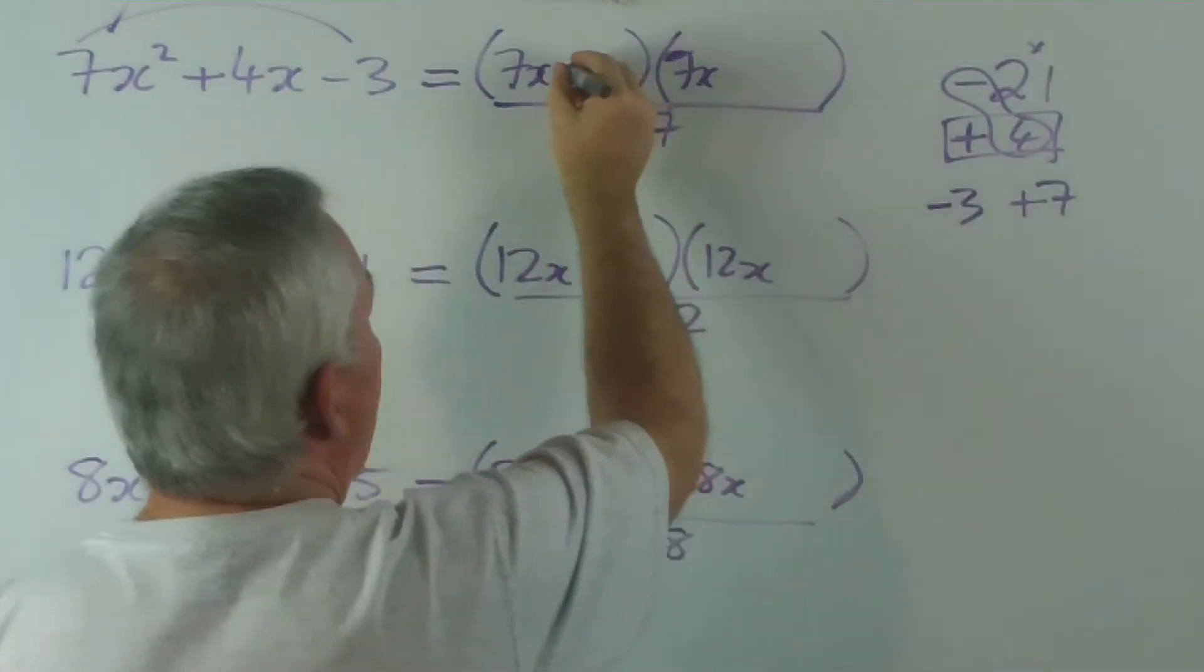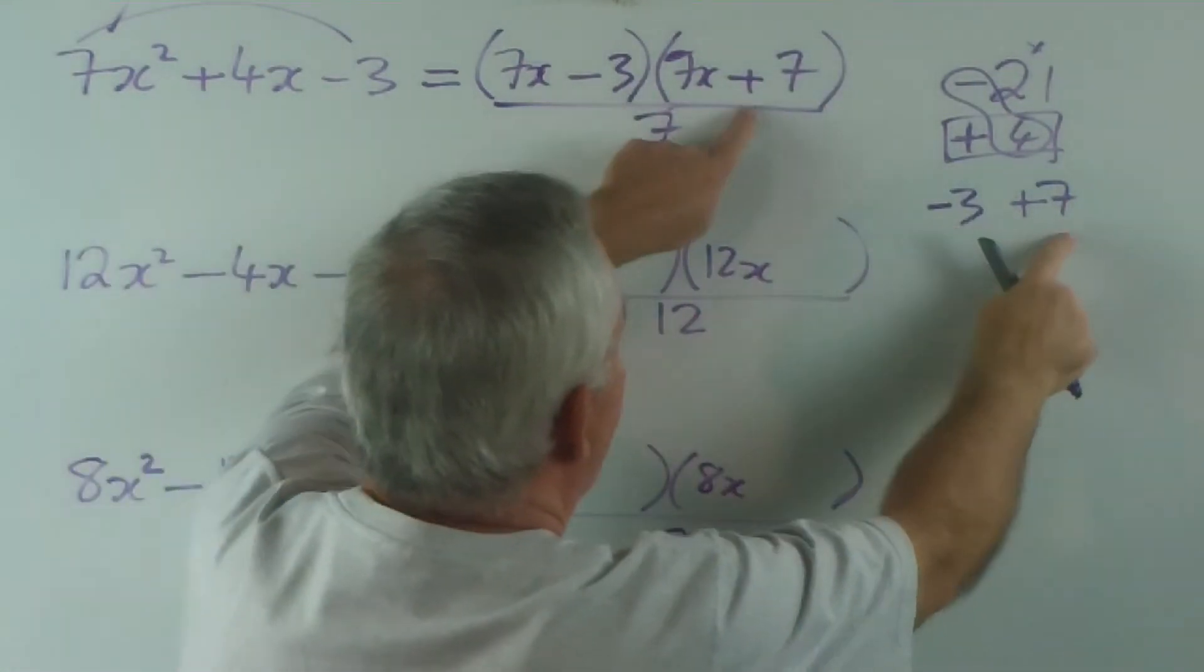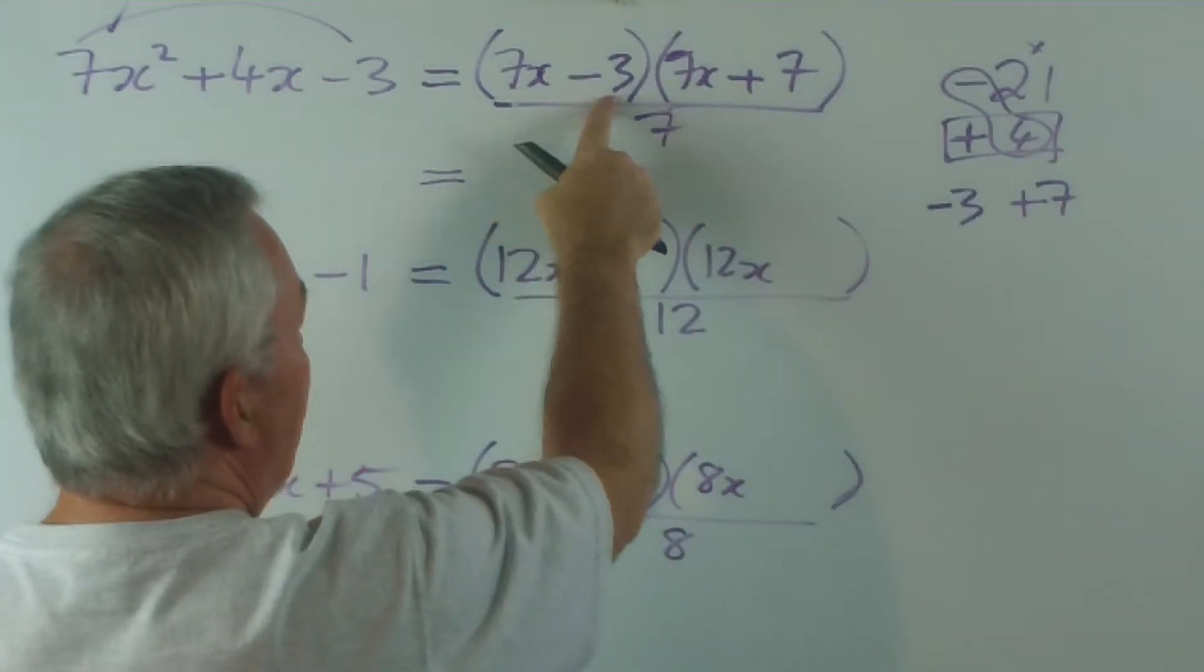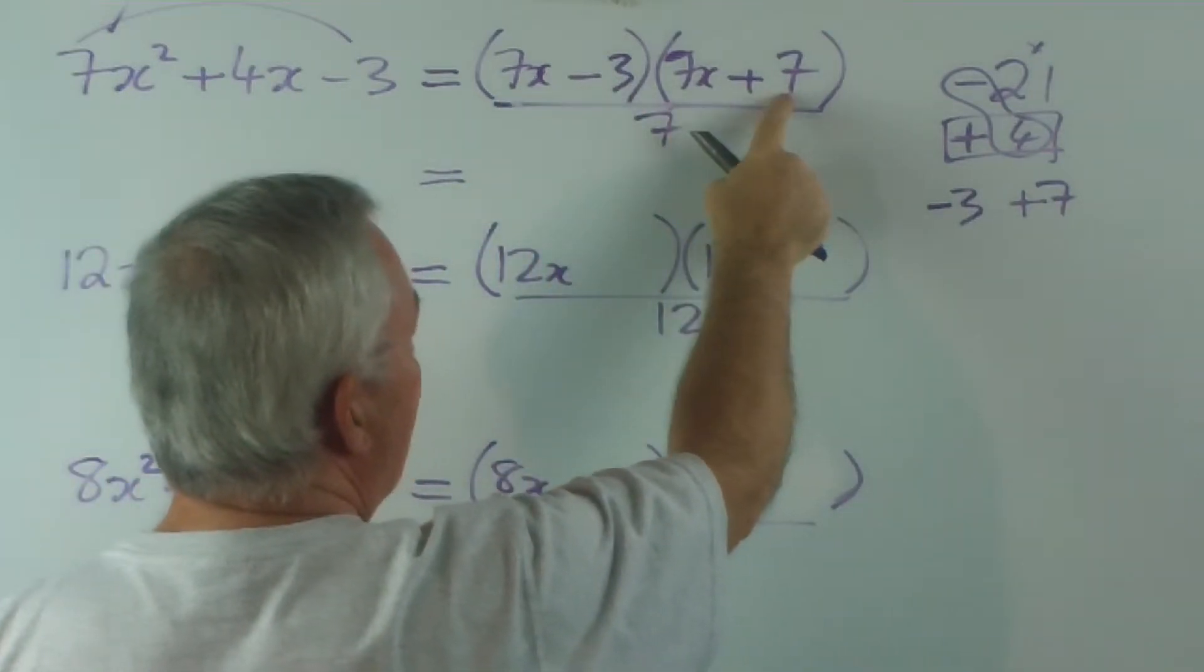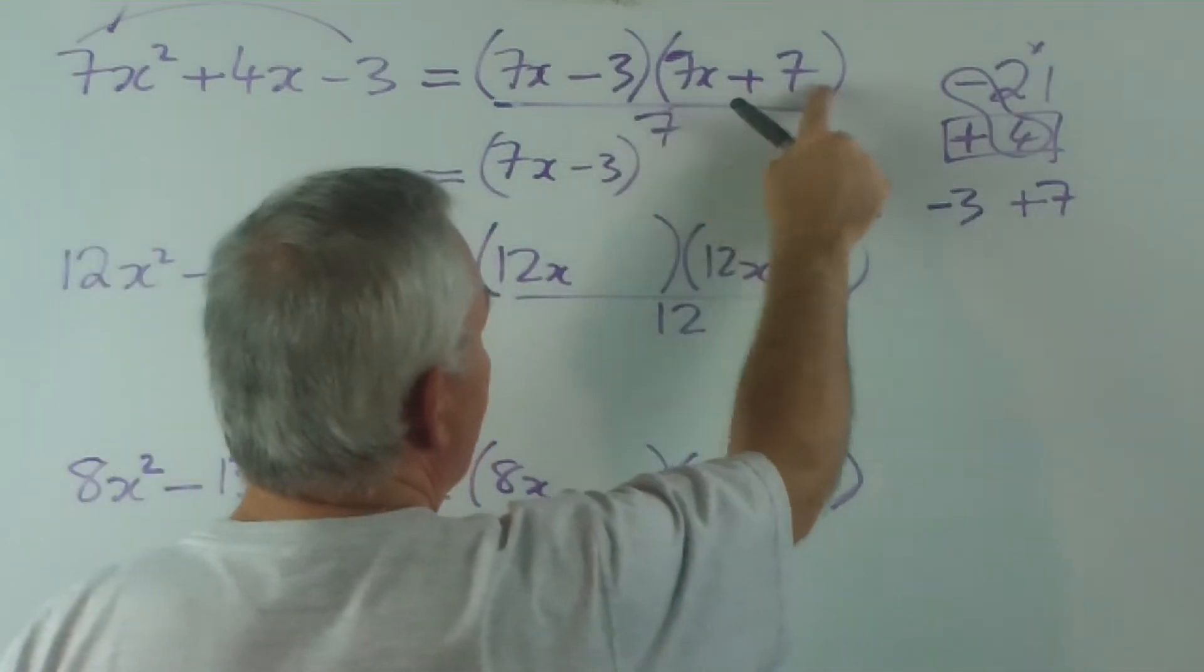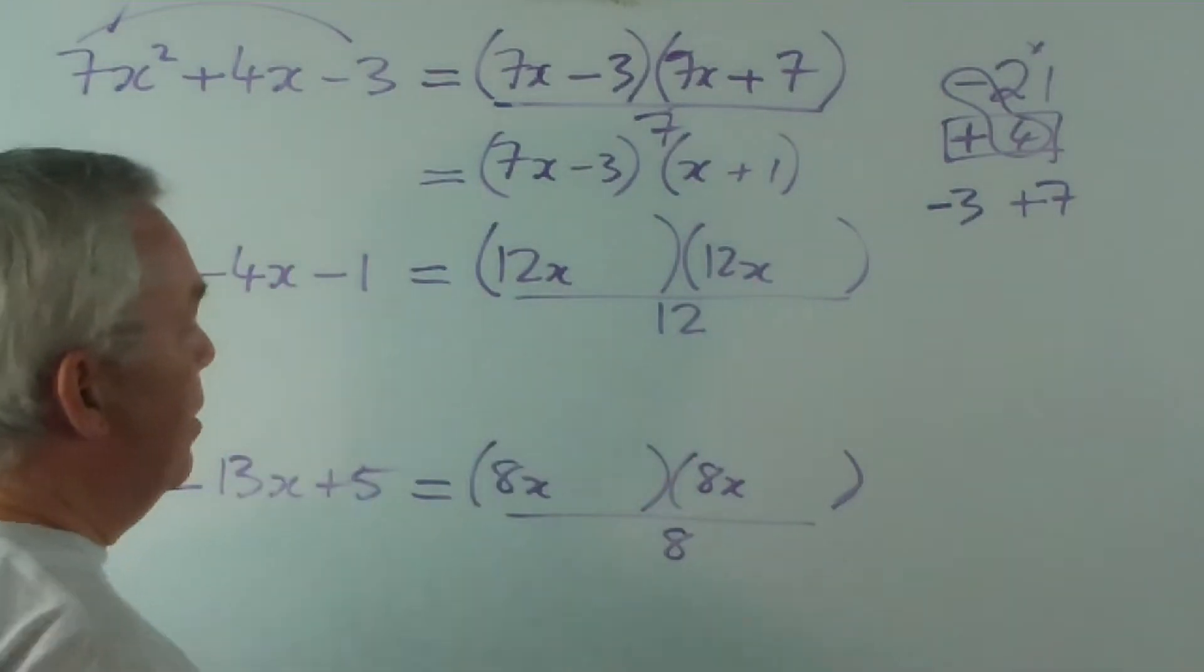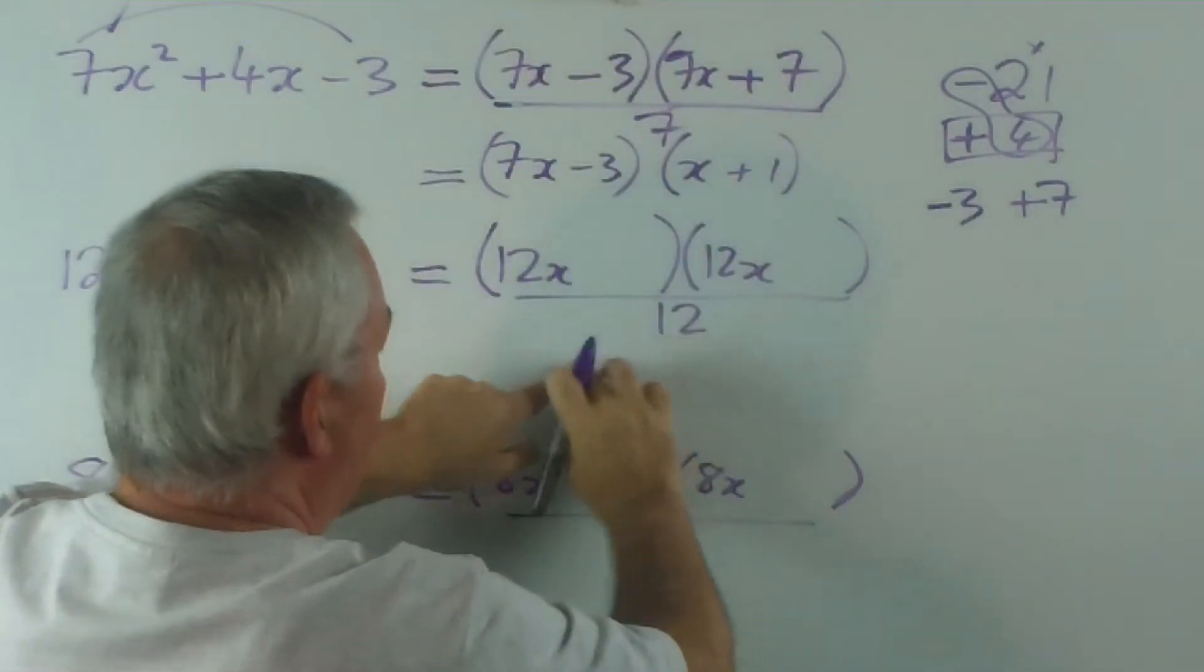We take these two numbers and we write them in. The order does not matter. There it is. We write in the minus 3 and the plus 7. And all that remains, there's only one more step remaining and that's to divide this 7 in. Now, 7 does not divide into this factor. It does divide into 7x but not the minus 3. But you notice it does divide over here. So, we leave the first factor untouched and we divide the 7 into this and make it 7 times smaller. 7 into 7x goes x and 7 into 7 goes 1. And that is factorised. The beauty of this method is it takes two lines of work.